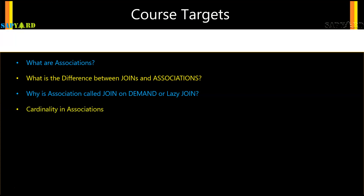We'll also learn about cardinalities in associations and talk about the types of associations. Many of you might not have heard that there are two types: ad hoc associations and exposed associations. We'll try to understand the difference between both of them and which one to use where.